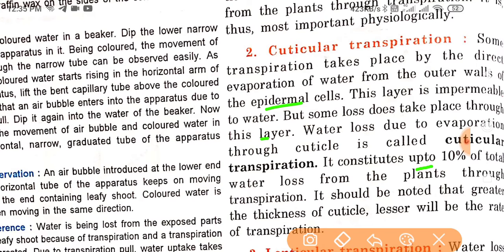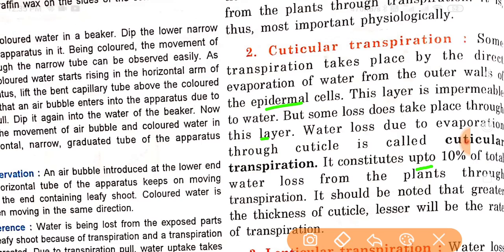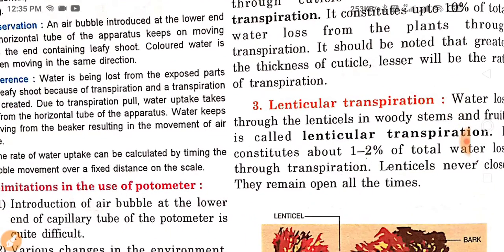It should be noted that the greater the thickness of the cuticle, the lesser will be the rate of transpiration. If the cuticle is thick, it checks the process of transpiration. Because it takes place through the cuticle, it is known as cuticular transpiration. The next type is lenticular transpiration.